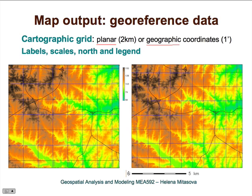We can use either projected or geographic coordinates. Here you can see a grid showing nice squares — these are two-kilometer squares in state plane meters. On the right, we have a grid that is rectangular but doesn't have squares; this shows projected geographic coordinates at one-minute size, which also essentially shows you the distortion we have compared to the spheroid.